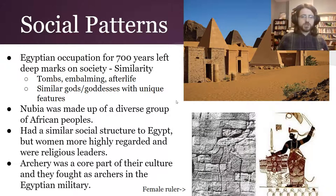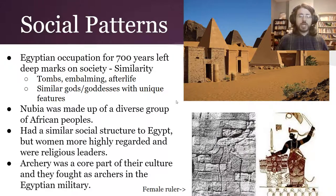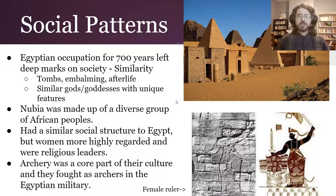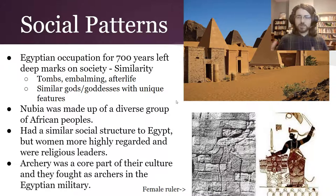They had similar social structures to Egypt in terms of hierarchy, but women were more highly regarded and could even be religious leaders, playing important roles in religious ceremonies. Archery was an important part of their culture — in fact, the Egyptian name for this area was Tasseti, which meant 'the land of the bow.' Nubia, by the way, means 'the land of gold,' which is a pretty cool thing to be named.